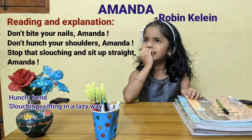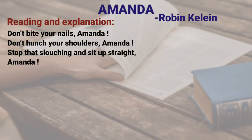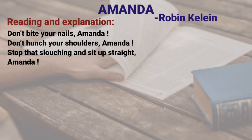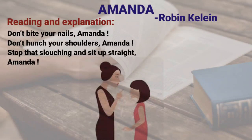In the first stanza, the poet is describing Amanda, a little girl who is always pointed out by her mother for her mistakes. The next stanza tells how she imagines her life to be. Amanda is instructed by her parents for biting her nails and for sitting lazily with her shoulders bent. The mother is nagging Amanda for biting nails, which is a bad habit. Next, she asks her to sit straight without bending her shoulders. Amanda bends her shoulders and sits lazily, and is being pointed out because her mother wants her to sit in a right posture.